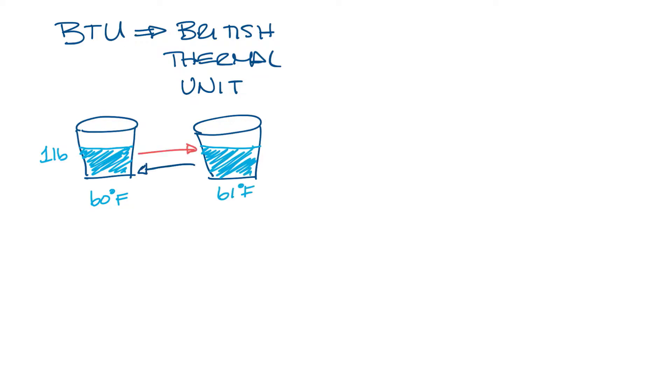You'll also see BTUH, which stands for BTUs per hour, often referred to as just BTUs as well. It's the amount of heat in BTUs that flows from one thing to another over an hour. Think of it as the number of BTUs of cooling the HVAC system can produce after running for one hour.